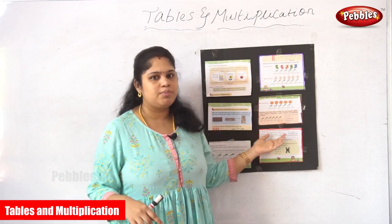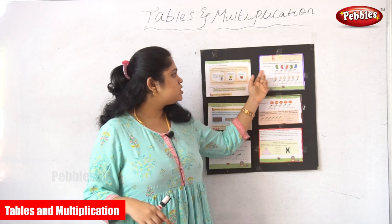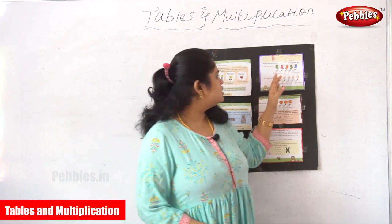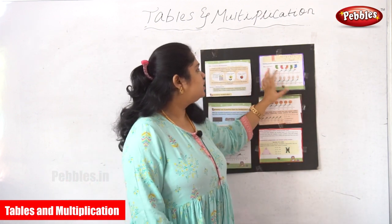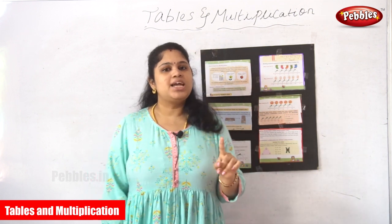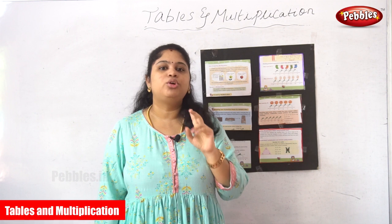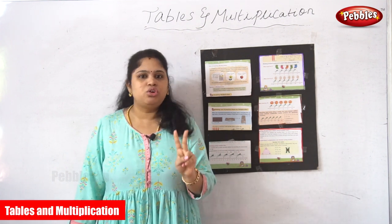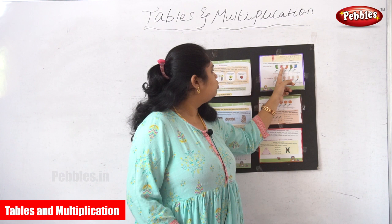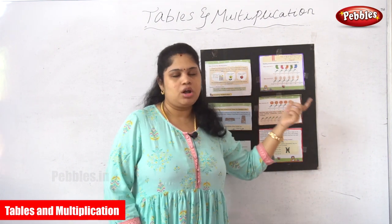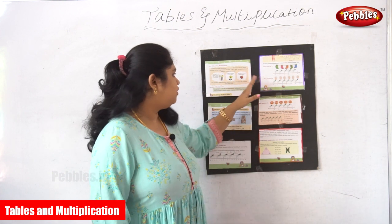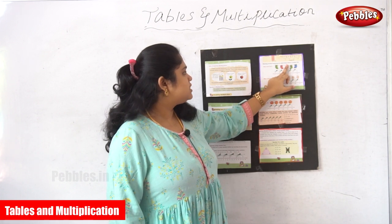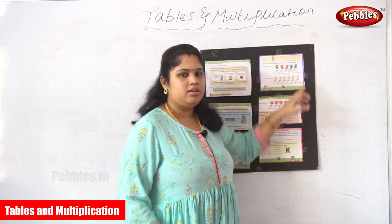We already saw skip counting by 5. Today we are going to see skip count by 2. Look here — in this picture, on one rope they have tied sets of socks. One set means two socks. There are one, two, three, four, five — five sets, or five pairs of socks. Skip count by two means: two, four, six, eight, ten.